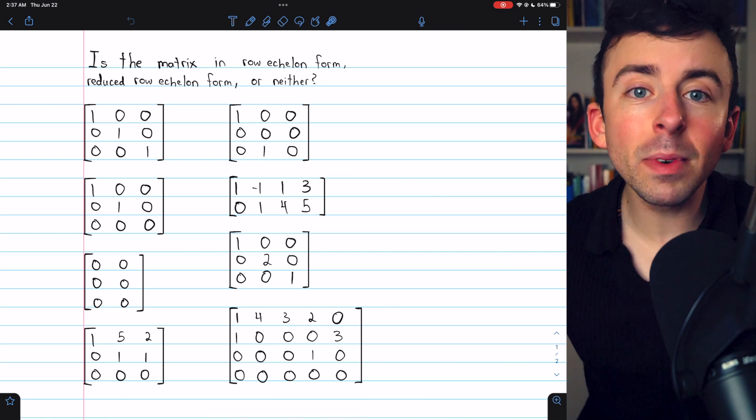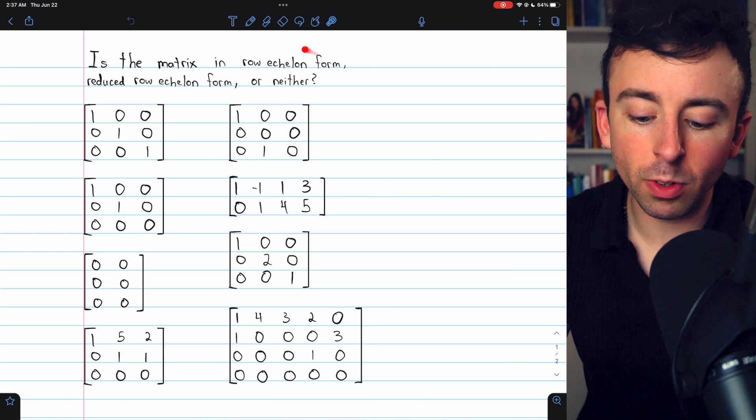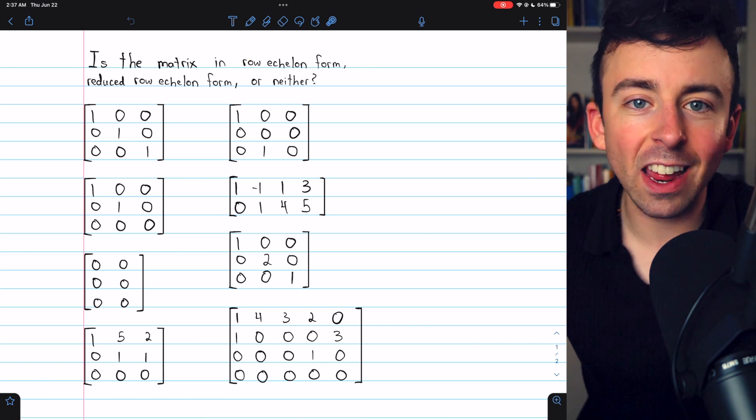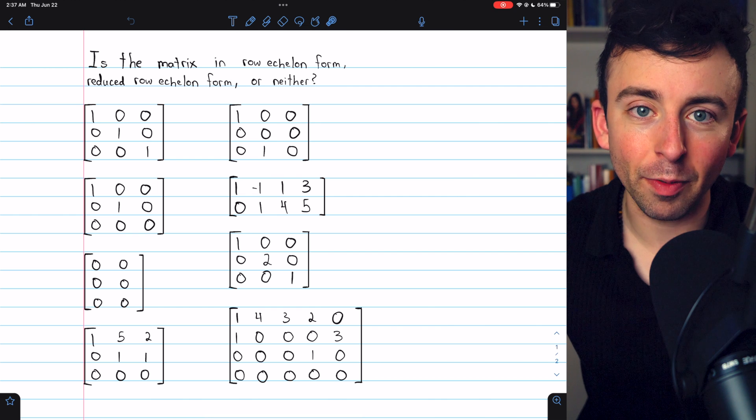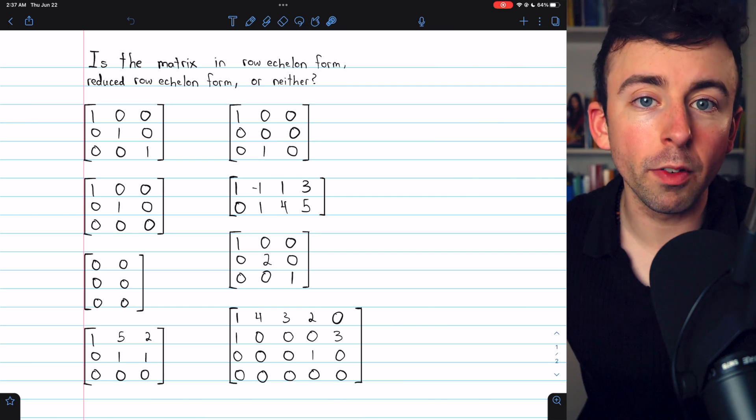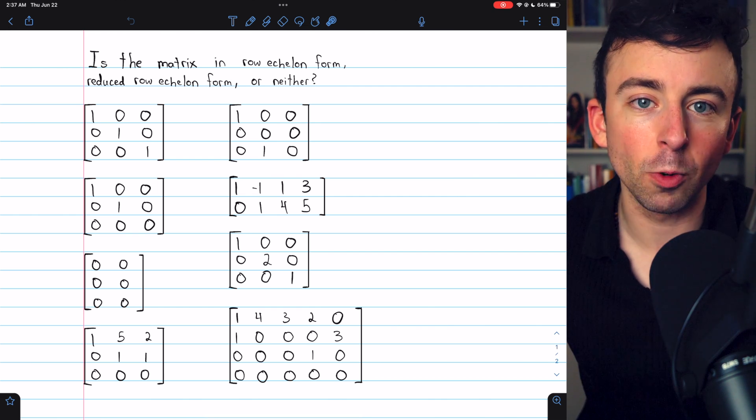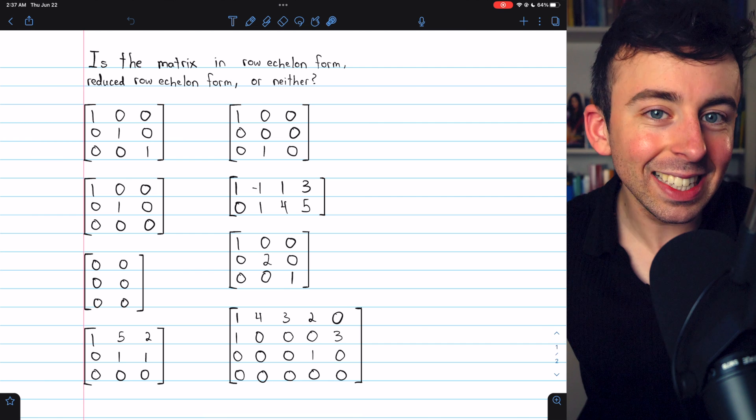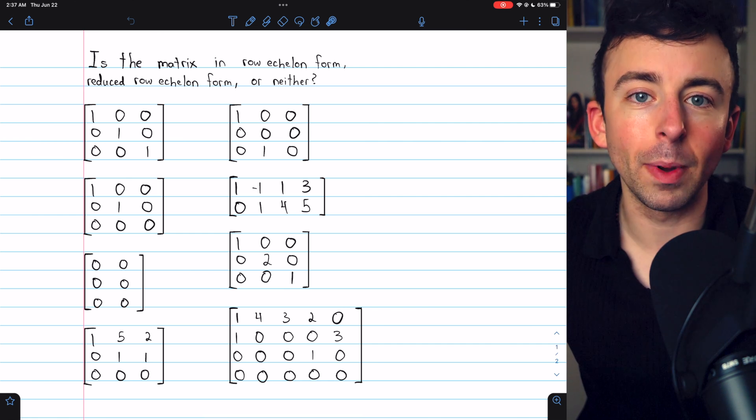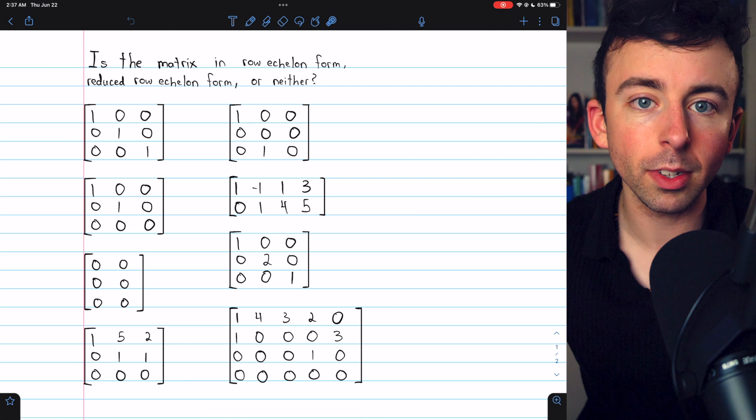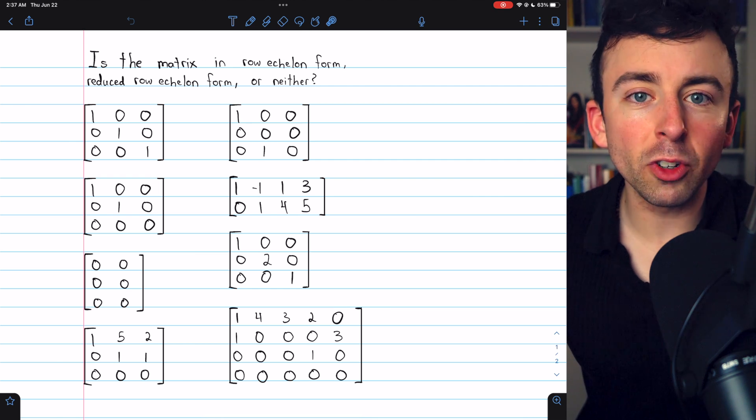I will mention some definitions allow matrices in row echelon form to have leading entries other than one. For our purposes, that's not the definition. The definition of row echelon form does require the leading entries are one, and those leading entries need to have zeros below them. Links in the description to my in-depth lessons on these forms. So take a look at these matrices and give it a shot yourself.